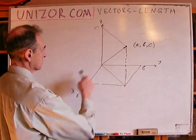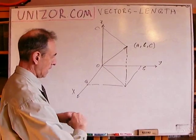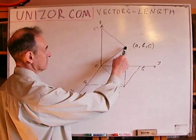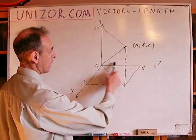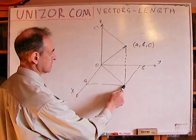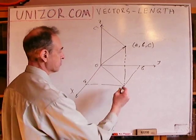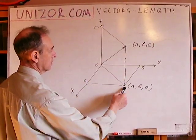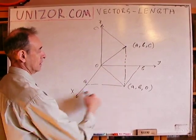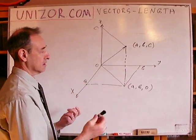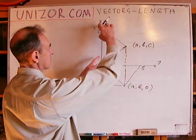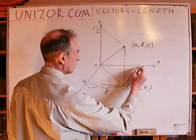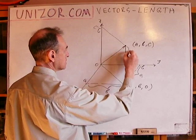Imagine x, y is a horizontal plane and the z-axis goes upwards. From this point I'm projecting down to the xy plane. The projected point has coordinates (a, b, 0). This height from the point itself to its projection on the xy plane is actually the third coordinate, c. So this piece is equal to b, this piece is equal to a, and this piece is equal to c.